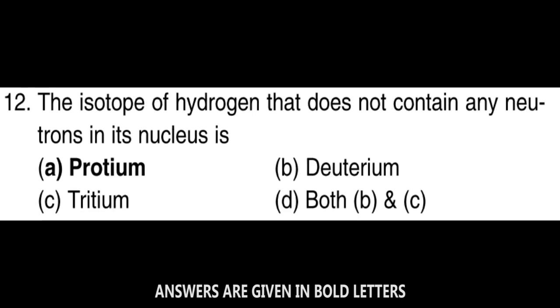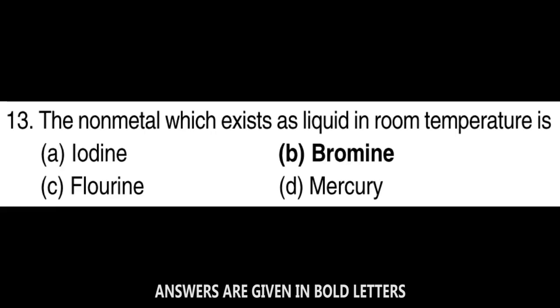Next question: The isotope of hydrogen that does not contain any neutrons in its nucleus is protium. Next question: The non-metal which exists as liquid in room temperature is bromine.